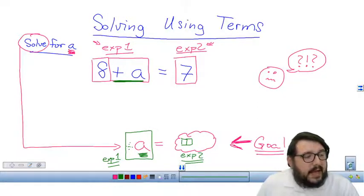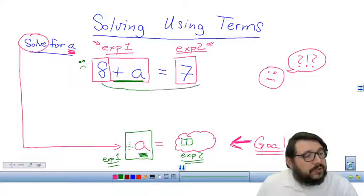Well, which one is making it not match my goal? Well, clearly it's this eight right here. This eight right here. I wish it wasn't in expression number one. So where can I put things that I don't want to be in expression number one? Well, I'm going to just move it over to expression number two.